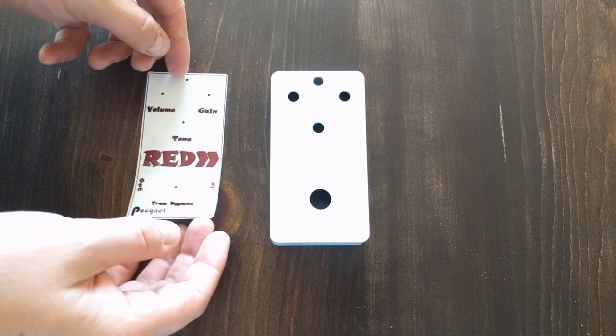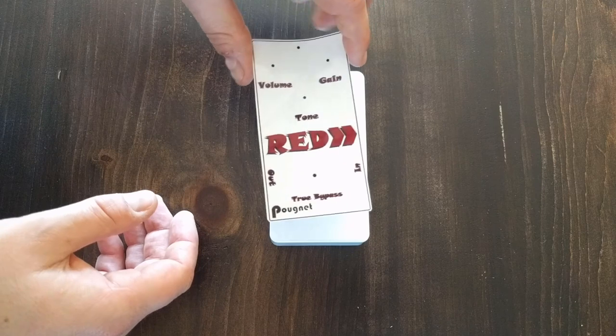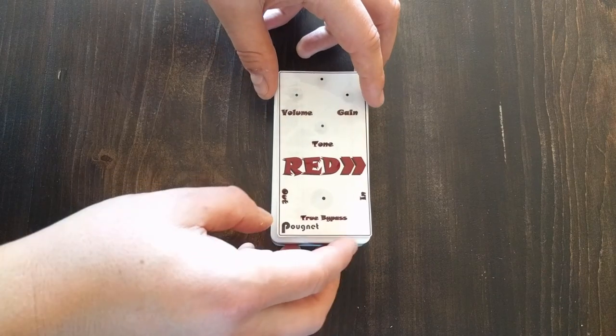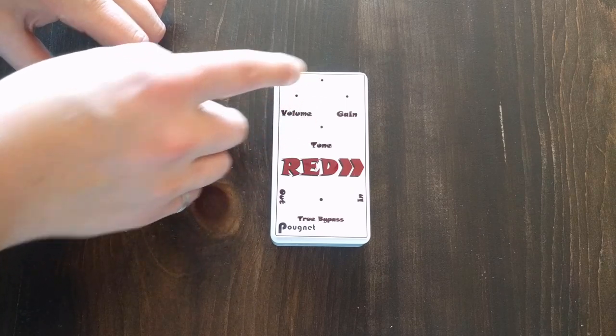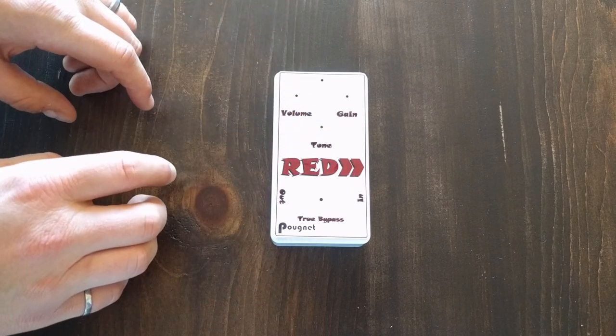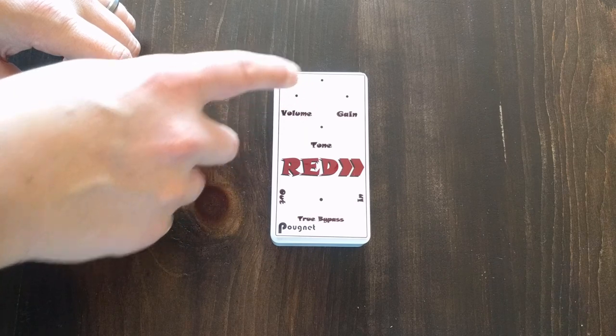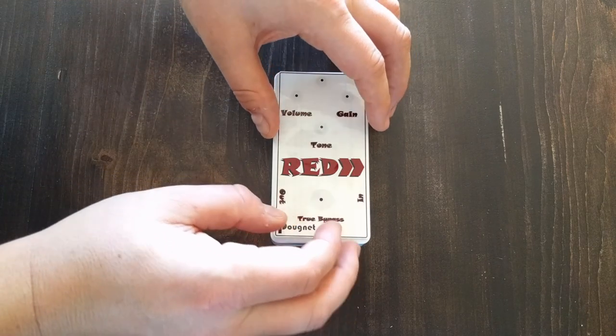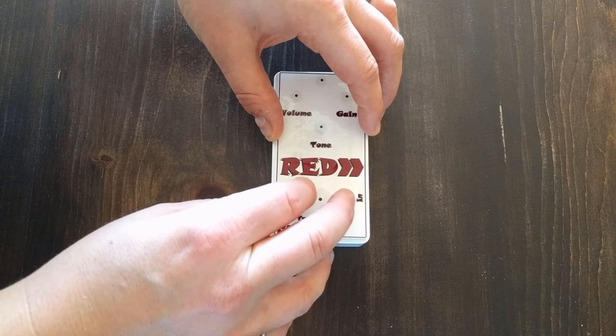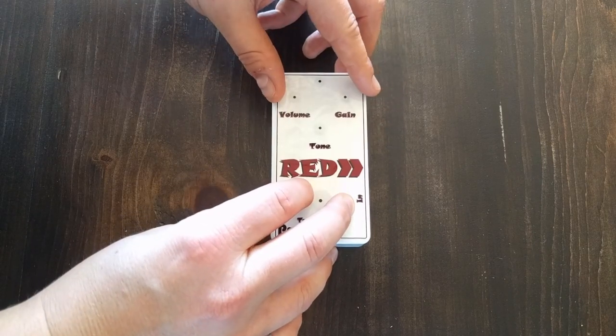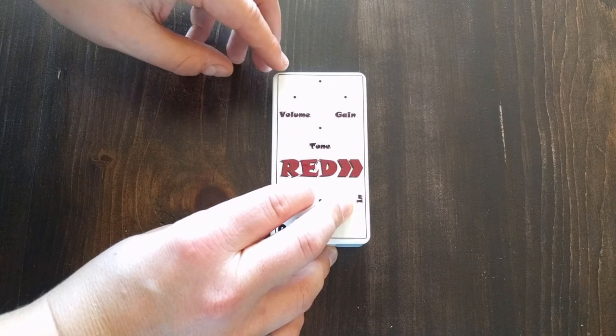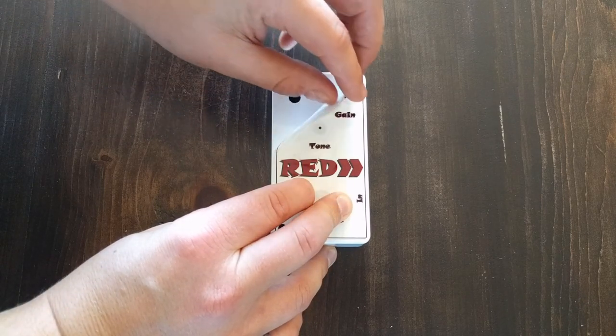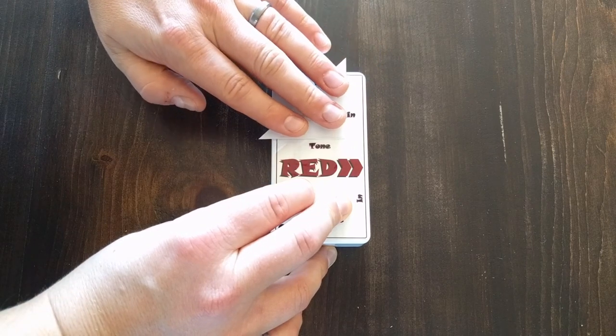So if you've ever put on a screen protector on a cell phone, this is definitely the same process. What you're going to want to do is line it up. I've got the dots there and I've got enough light here that I can see that they line up properly over my drilled out locations on my enclosure. What I then do is I simply put a couple fingers where there's no ink, make sure I'm in line, and then I lift up one corner and just roll the sticker down.